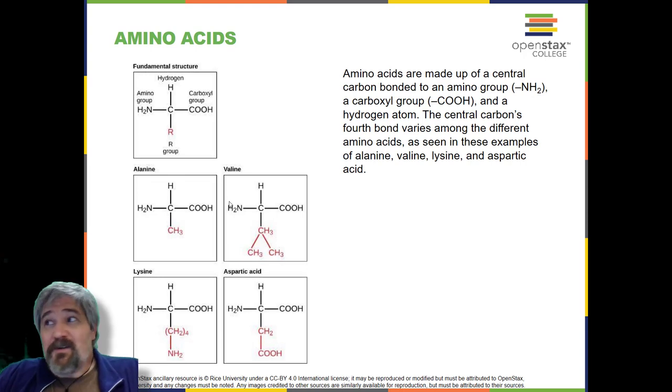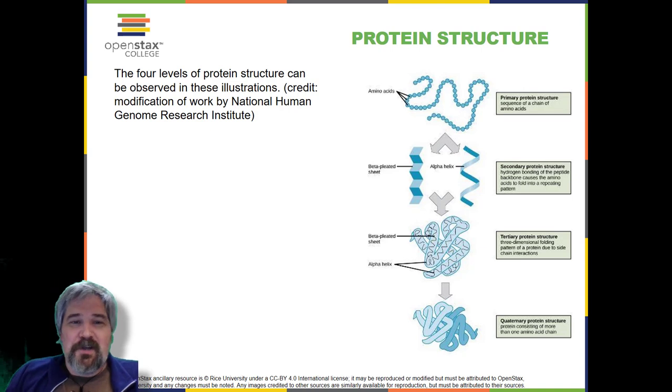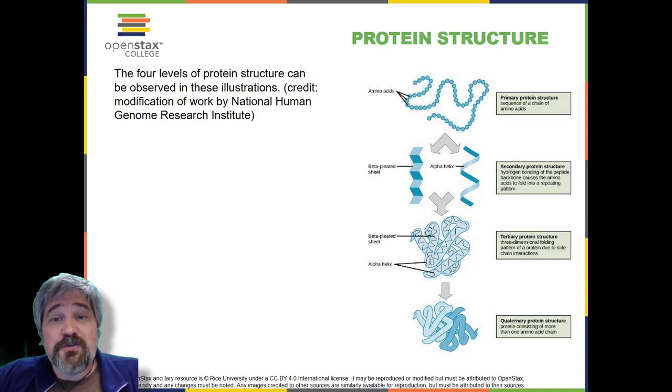Okay, now back to protein structure. As discussed earlier, the shape of a protein is crucial to its function. To understand how the protein gets its final shape or conformation, we need to understand the four levels of protein structure: Primary, secondary, tertiary, and quaternary.